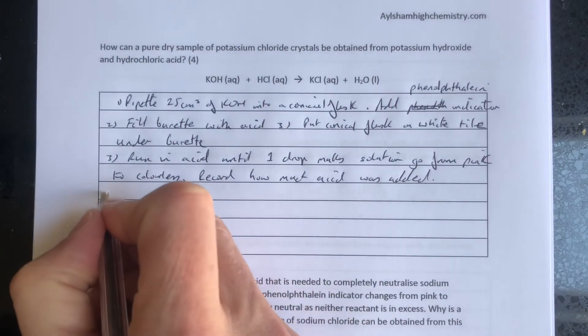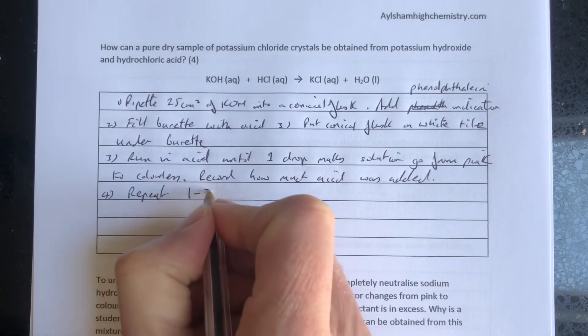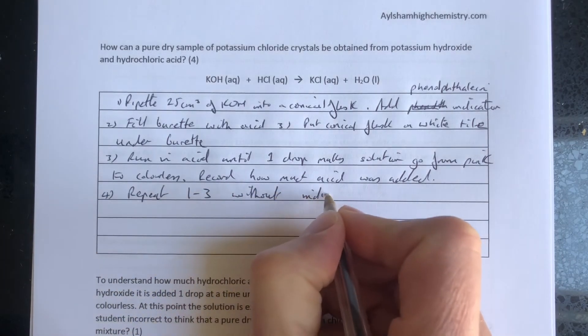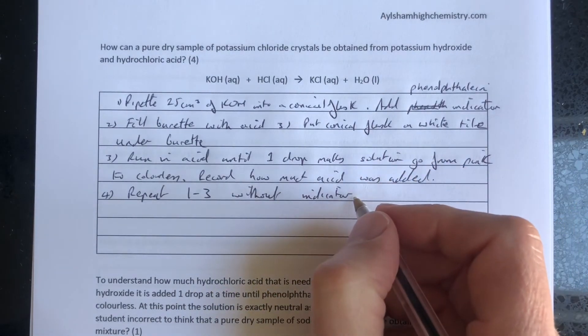Step four: repeat steps one, two, and three without indicator. Now we won't see a color change, which is why we need to measure the amounts of acid and alkali so carefully.